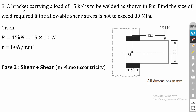The problem is: a bracket carrying a load of 15 kN is to be welded as shown in figure. Find the size of the weld required if the allowable shear stress is not to exceed 80 MPa. The load and the maximum allowable shear stress value are given. From this we have to calculate the size of the weld, that is h. The given data are P = 15 kN and tau = 80 N/mm². The weld region and the load are acting on the same plane, so eccentricity is present and this eccentricity will produce a twisting moment.